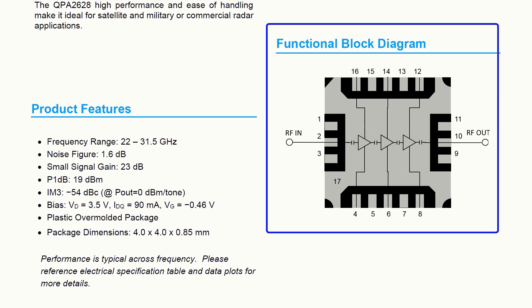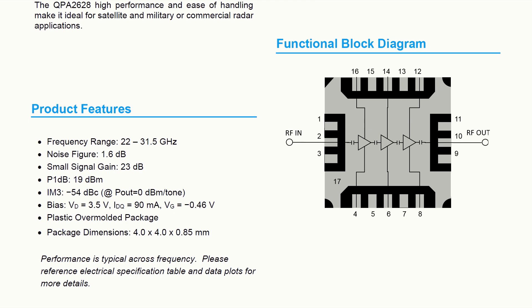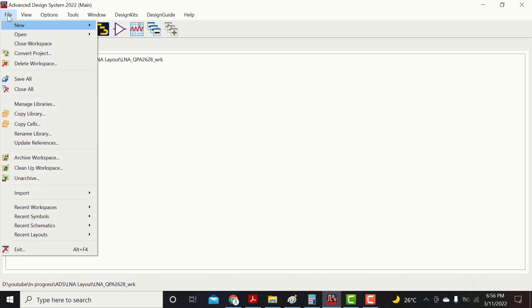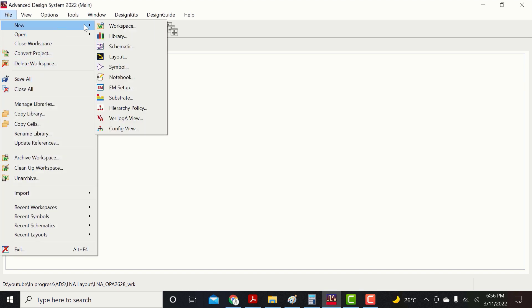This is the block diagram of this LNA. It has a total of 16 pins. Pin number 2 is RF in and pin number 10 is RF out. Now let's start making the layout.